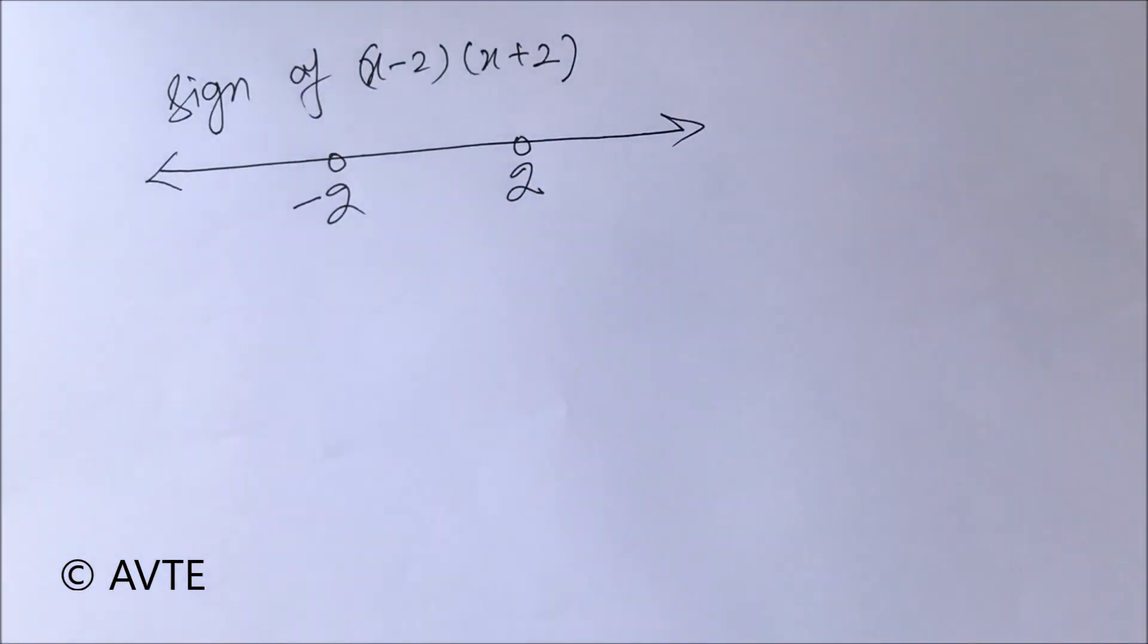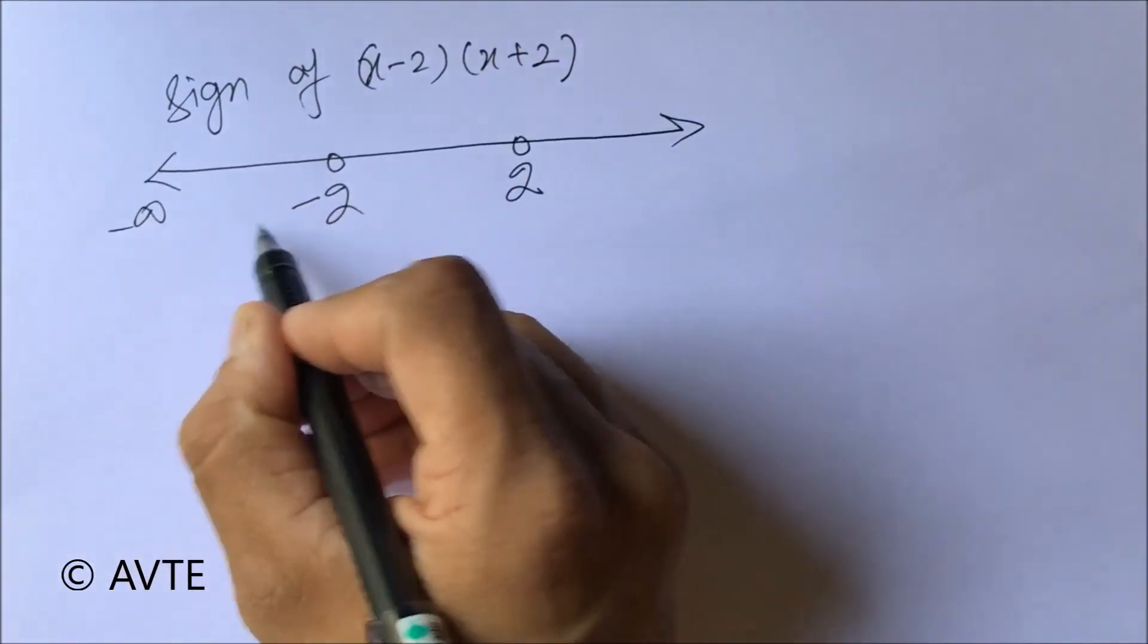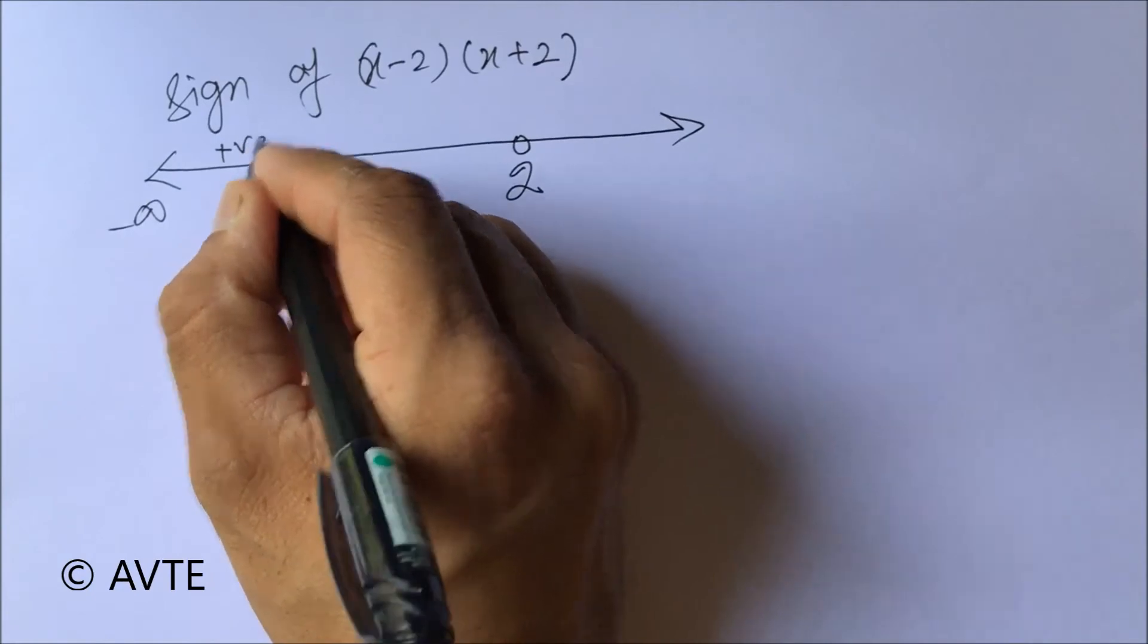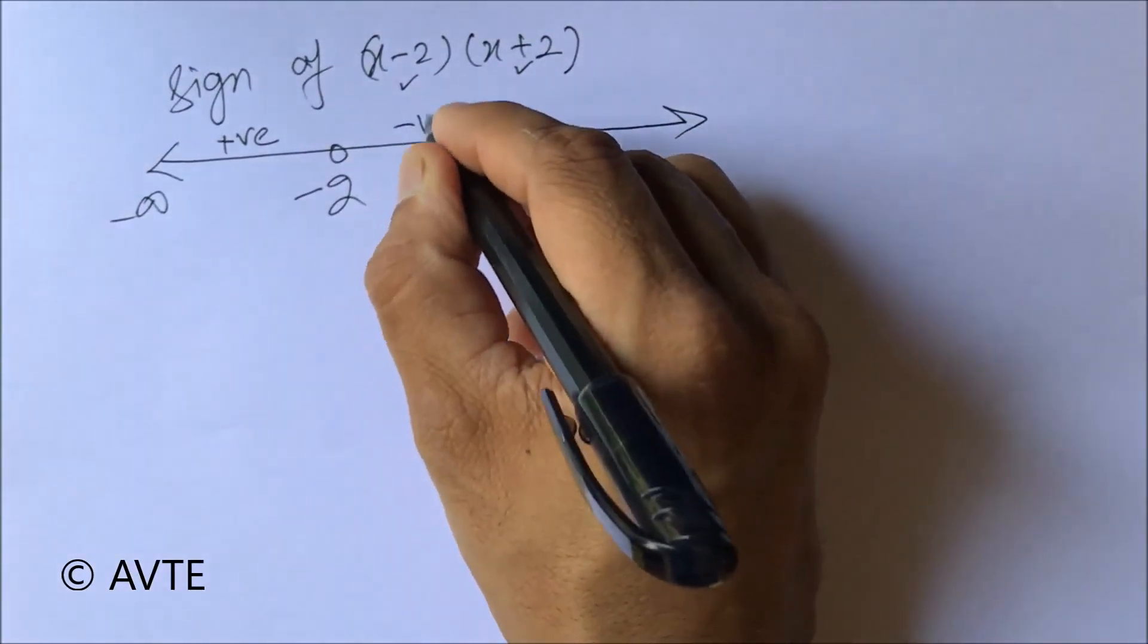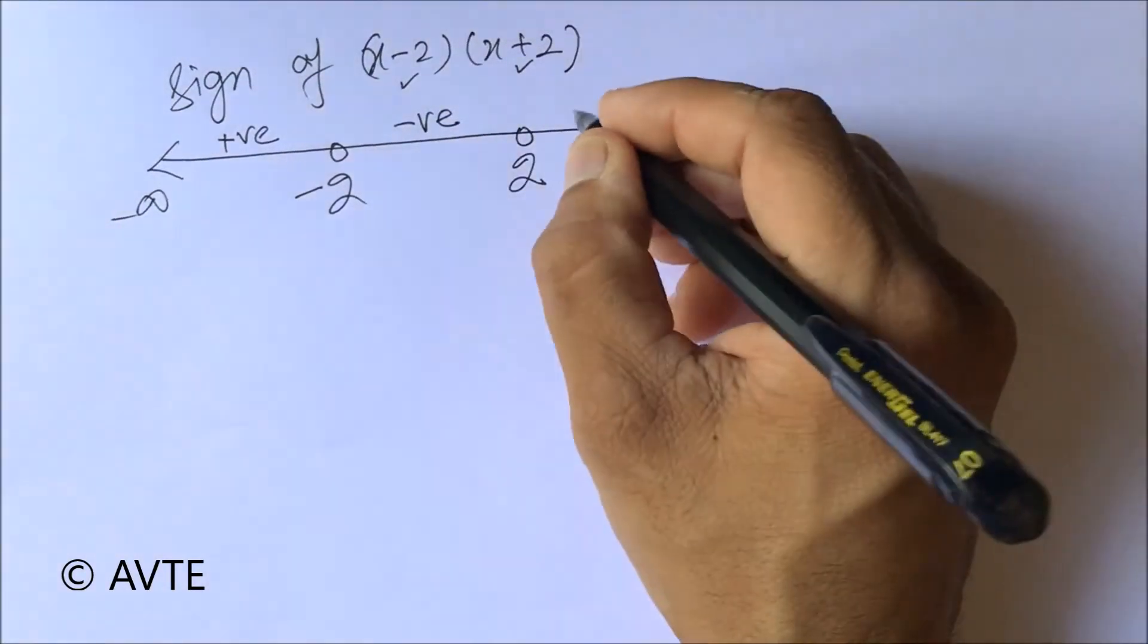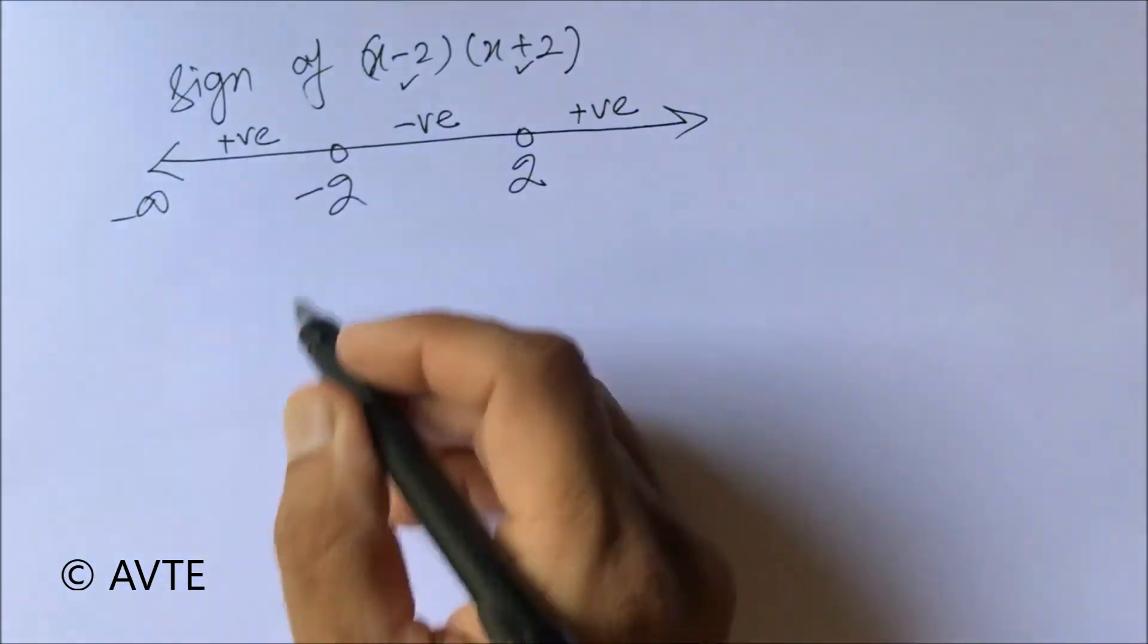If I take a number between minus infinity to minus 2, this will give us positive because both factors will be negative, so the product of two negative quantities will be positive. Between minus 2 to 2, one factor will be positive, the other negative, so the product will be negative. And the same way it will be positive.